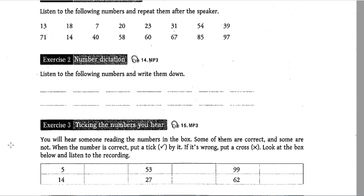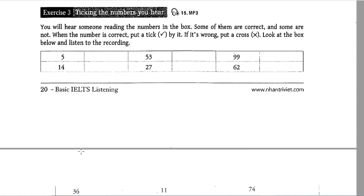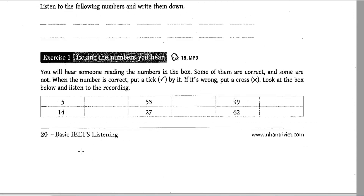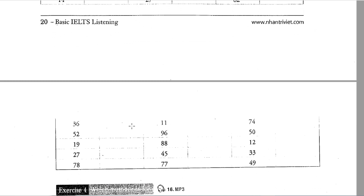Exercise 3: Ticking the numbers you hear. You will hear someone reading the numbers in the box. Some of them are correct and some are not. When the number is correct, put a tick by it. If it's wrong, put a cross. Look at the box below and listen to the tape. 5, 63, 99, 40, 27, 52, 36, 11, 74. 5, 64, 52, 93, 60, 19, 88, 12, 26, 35, 43, 78, 77, 49.